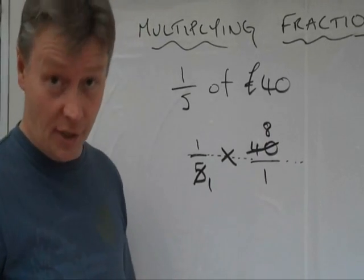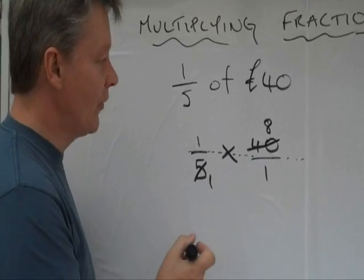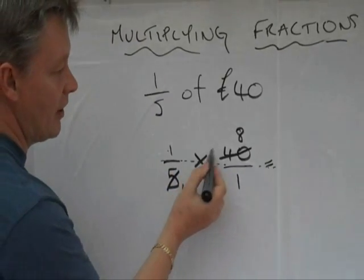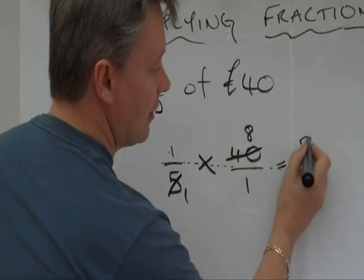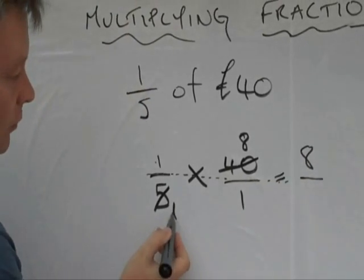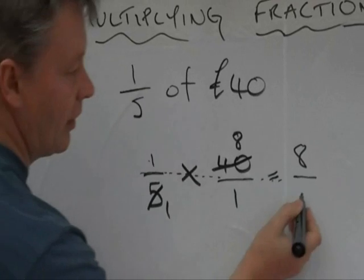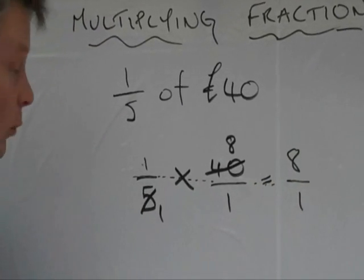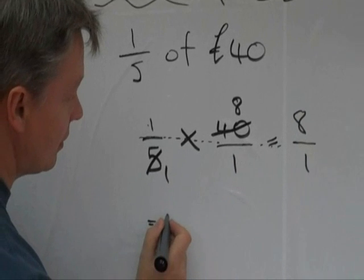And it just makes it a little bit easier to multiply. So, the question now is, 1 times 8 is 8, over 1 times 1, which is 1. So the answer is 8 over 1, which is 8.